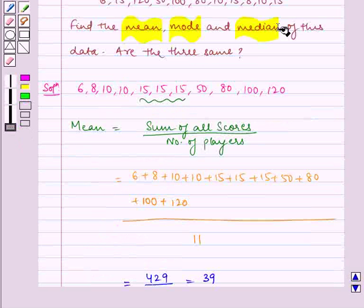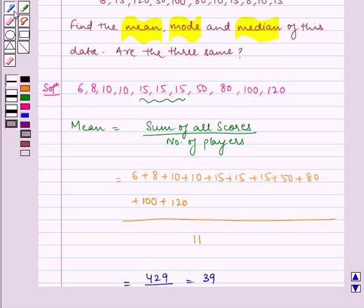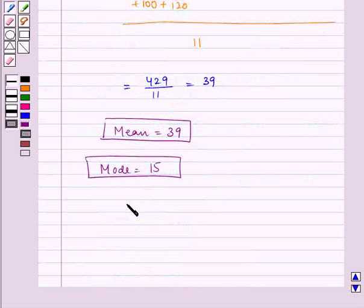Now, finding the median. Median is the middle value of the observation. Here we can see the middle value of the observation is 15. Because there are 11 scores, the 6th score will be the median: 1, 2, 3, 4, 5, and 6. This is the 6th score which is 15. Hence, median equals 15.